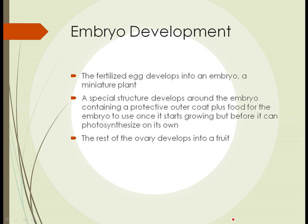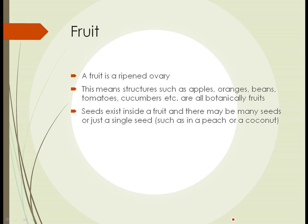The rest of the ovary that contains all of these ovules develops into a fruit. A plant fruit is a ripened ovary — so an apple, orange, watermelon, beans, tomatoes, and cucumbers are all botanically fruits because they are ripened ovaries. Food-wise we might not consider tomatoes and cucumbers fruits, but botanically they are. The seeds exist inside the fruit, and there might be many seeds as in an apple or orange, or just a single seed as in a peach or a coconut.